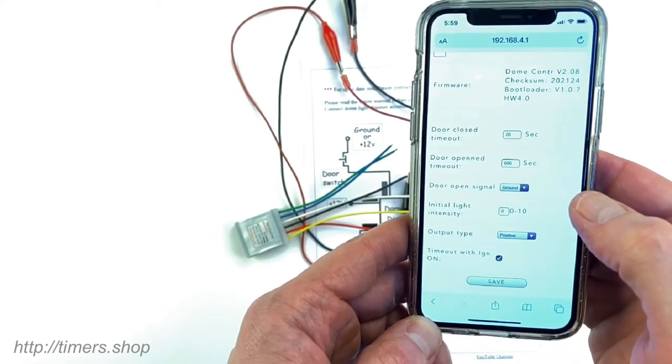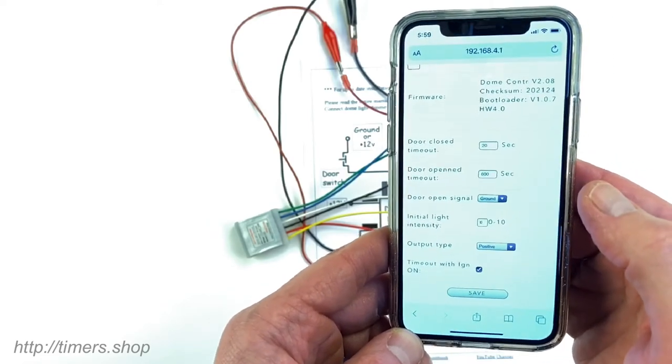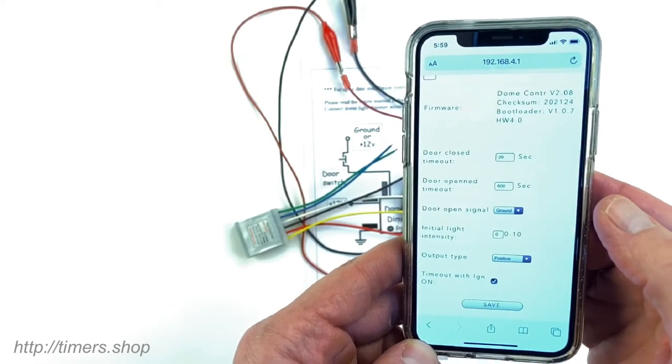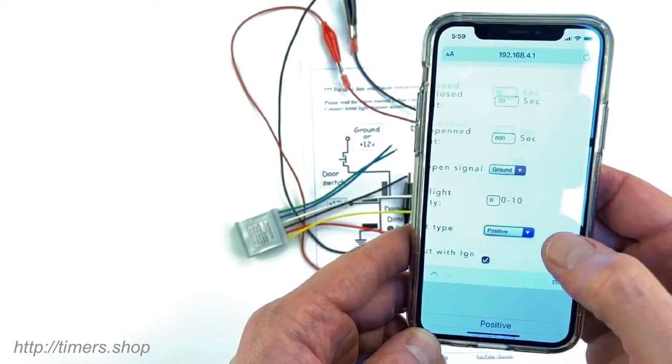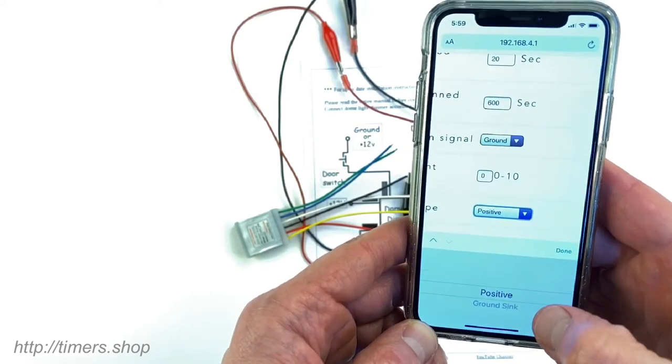You can change the initial light intensity depending on the bulbs, whether LEDs or incandescent. Output could be changed from positive to ground sink.